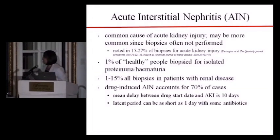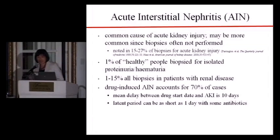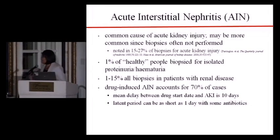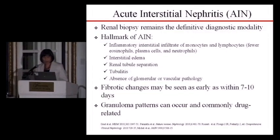Let's talk about AIN — acute interstitial nephritis. It may be even more common than we know because we don't often biopsy someone we suspect has AIN. Studies suggest AIN may comprise about 15% to 27% of biopsies for AKI, and about 1% of biopsies in so-called healthy individuals with isolated proteinuria or hematuria, and 1% to 15% of all biopsies in patients with renal disease. Drugs remain the most common cause, accounting for about 70%. Renal biopsy is still the definitive diagnostic modality.